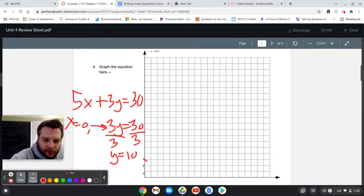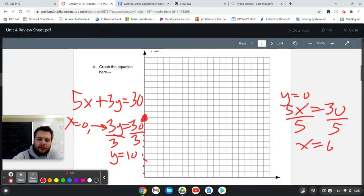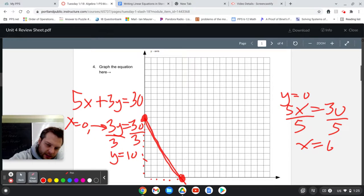So count to 10. 1, 2, 3, 4, 5, 6, 7, 8, 9, 10. There's my y intercept. Now I'm going to do the same thing. If we say that y is equal to zero, then we know that 5x is equal to 30. Dividing both sides by five tells me that the x intercept is six. 1, 2, 3, 4, 5, 6. So then I have my y intercept and my x intercept.